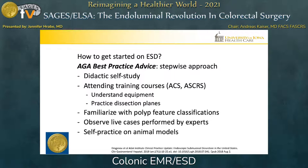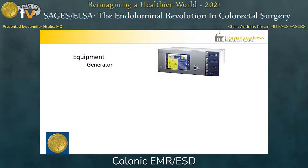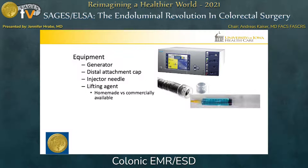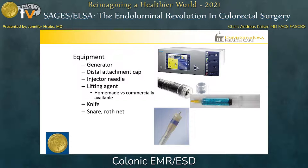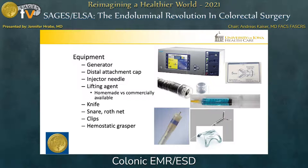The equipment specific to ESD includes a generator, a distal attachment cap, the injection needle and lifting agent — which can be made in-house or be commercially available — the dissection knife, which is unique to ESD, and a snare and Rothnet, potentially used for retrieving the polyp. Hemoclips and hemostatic raspers, in case bleeding is encountered, are also important tools.